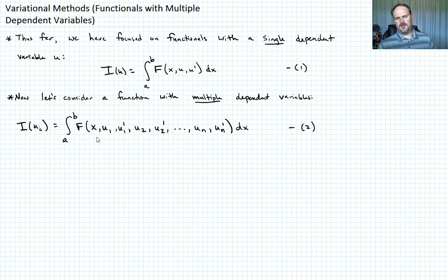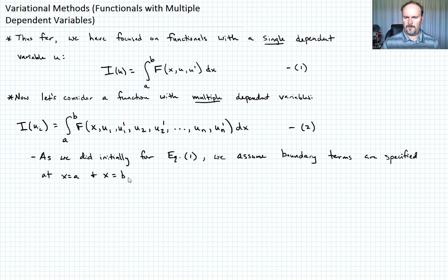And I'll remind you that, obviously, the u1, u1 prime, u2, u2 prime, all of these are functions of x in themselves, okay? So just like we did when we were developing the solution for equation 1, we're going to begin by assuming that the boundary terms are all specified at x equals a and x equals b. And we're going to assume that for each u of i, where i goes from 1 to n.